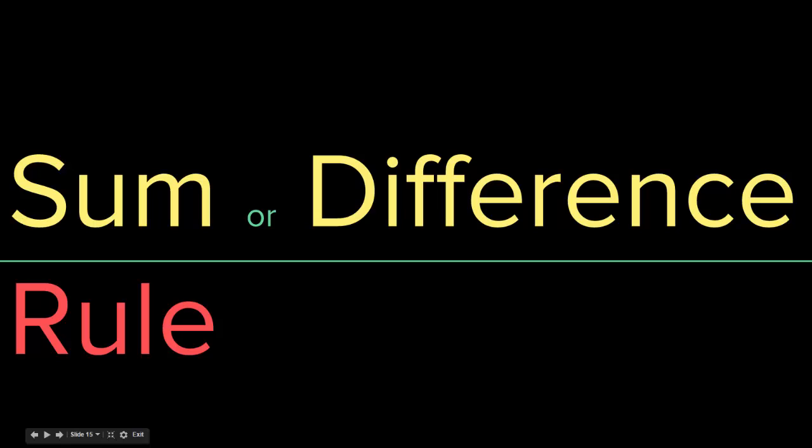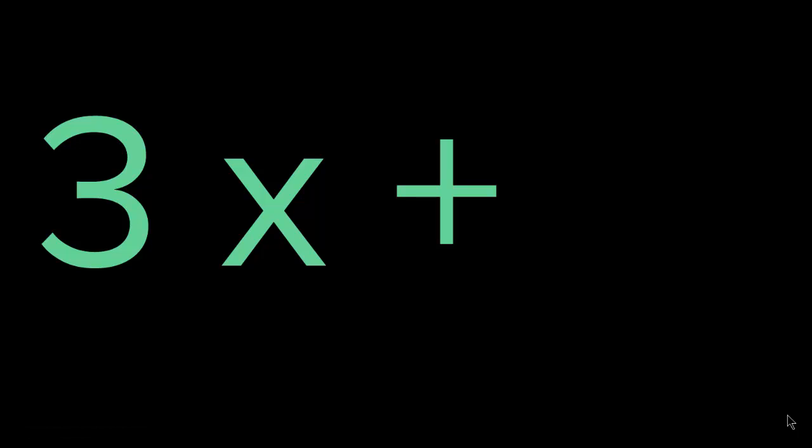So far we have talked about the derivative of a constant and the derivative of a constant times a variable. But what happens if we add parts to it? Let's say we have an addition operation and another function that equals 2, a constant. How do you find the derivative of 3x plus 2?